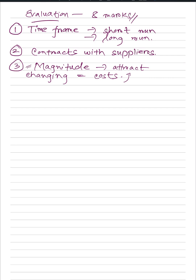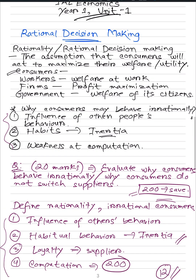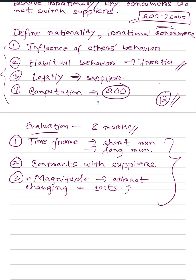Those three evaluation points get your 8 marks, and then just a small conclusion explaining why consumers do not change suppliers and that in the long run they might. This is basically it for rational decision making in Unit One. If you know this essay question structure, you can apply it to every essay on rationality because they give you the same questions with different scenarios — that's where your application comes in. Thanks for watching.